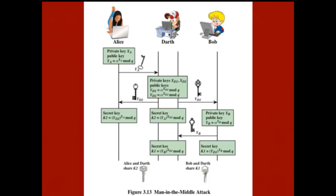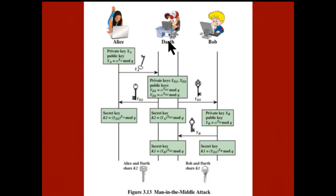The basic Diffie-Hellman protocol is insecure against a man-in-the-middle attack. In this attack, Darth intercepts messages between Alice and Bob — appearing to Alice as if he is Bob, and to Bob as if he is Alice. Alice communicates with Darth thinking it's Bob, Bob communicates with Darth thinking it's Alice, and Darth reads everything. The basic DH protocol does not stop this, and that's a problem that must be solved.